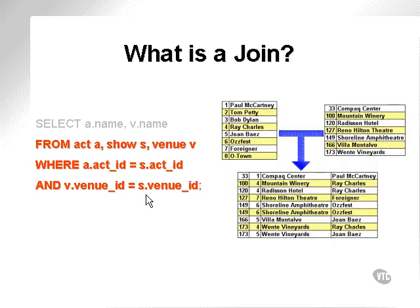Here's another picture of a similar thing. This is simply data. What we're doing is taking the ACT data and the SHOW data and joining them together. In this case, we have the IDs included as well. So this query does not exactly match this diagram.